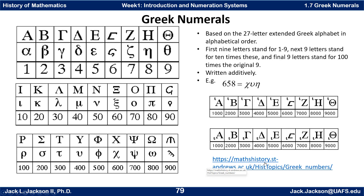If you look at the link to the Boyer History of Mathematics article, which is where these tables came from, it gives a little more in-depth explanation of how some of these things work. In the next video, we're on to our modern system, which is called the Hindu-Arabic numerals.